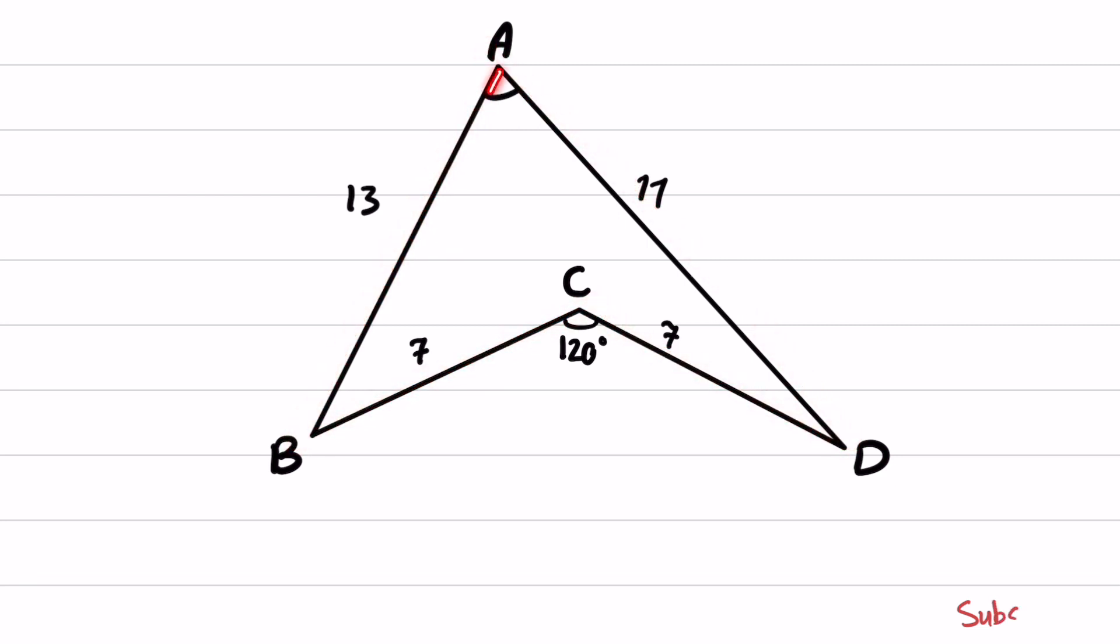The lengths of AB is 13, AD is 11, and BC and CD are 7. The angle C is given as 120, and the question asks to find angle A.